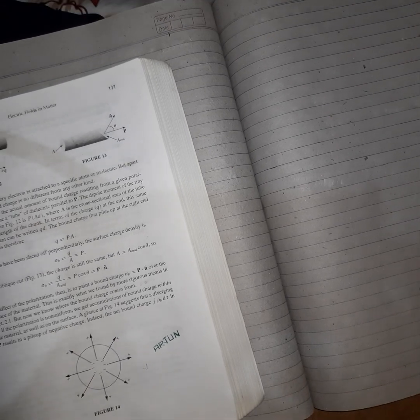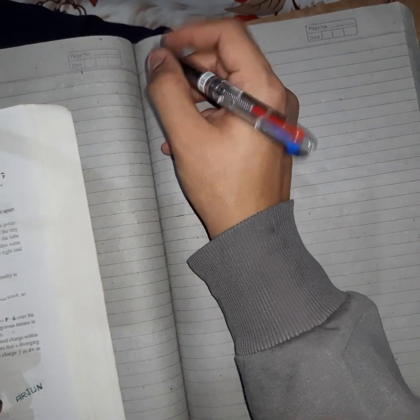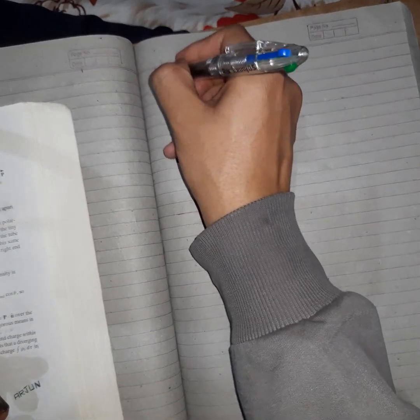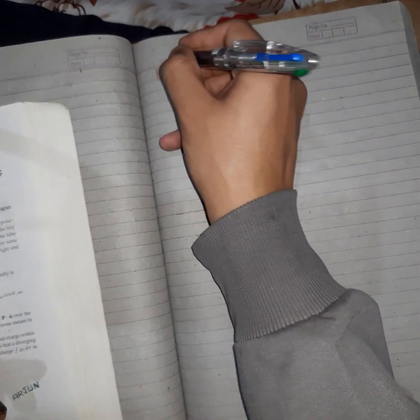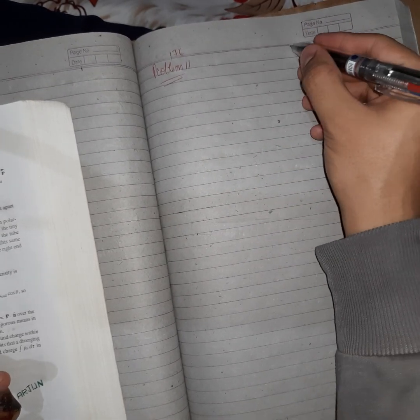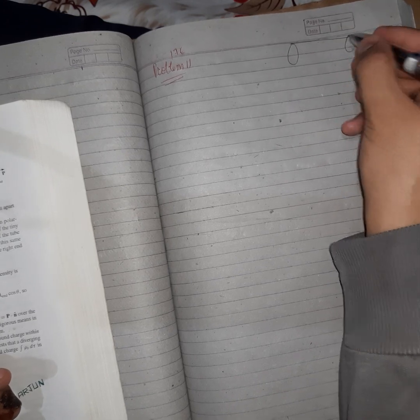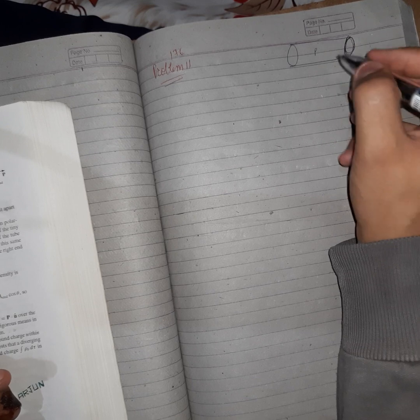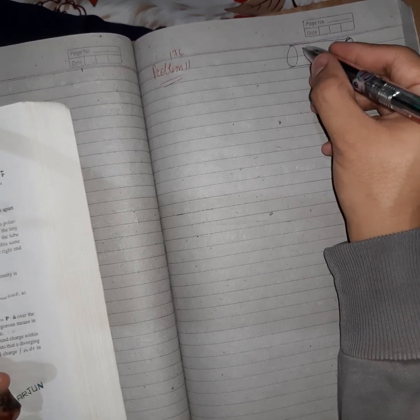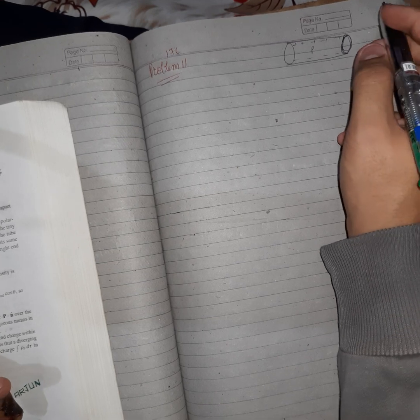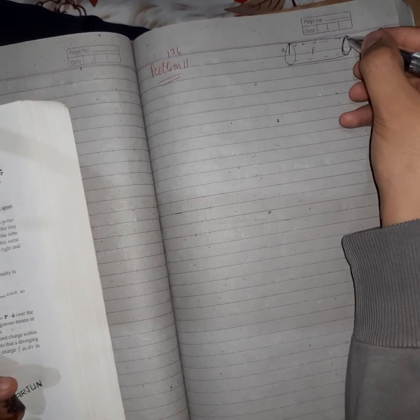We need to sketch the direction of electric field and we need to find the bound charges. So this is problem number 11 on page number 176. We have a cylinder here and it has polarization p inside. Suppose like this: positive positive positive, negative negative negative, and it has radius a and length as l.